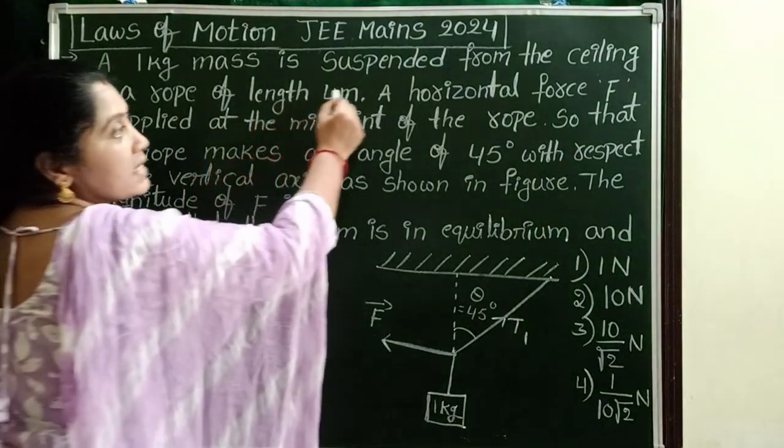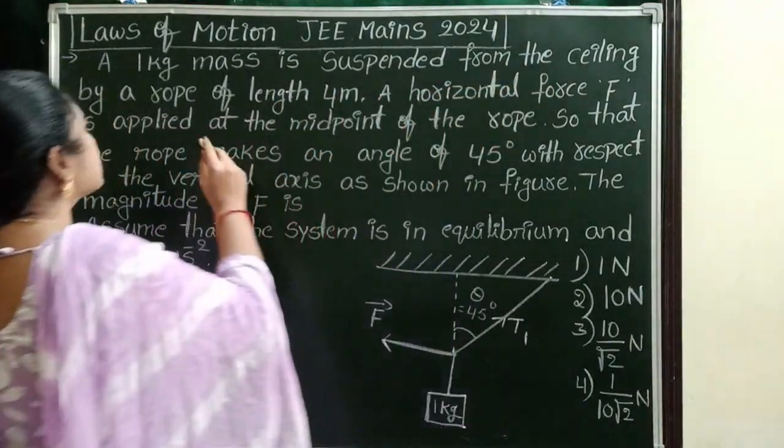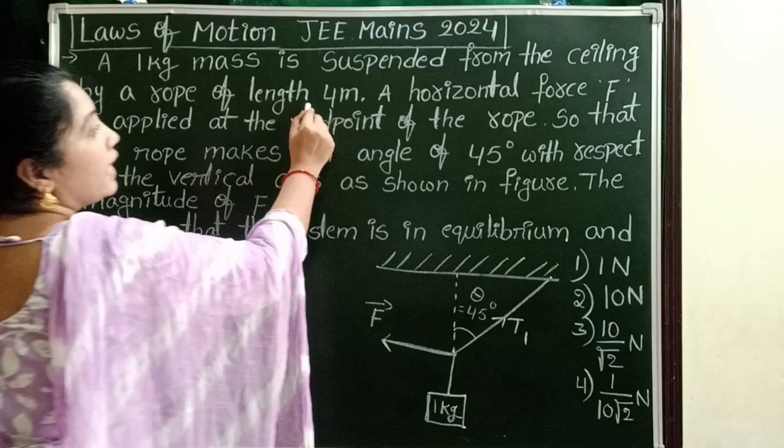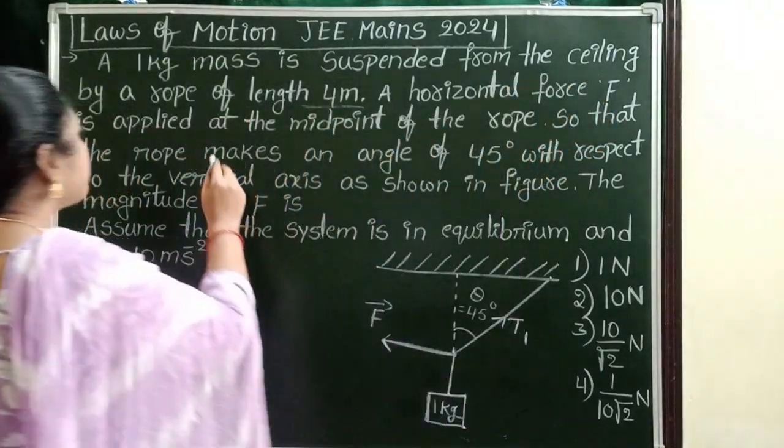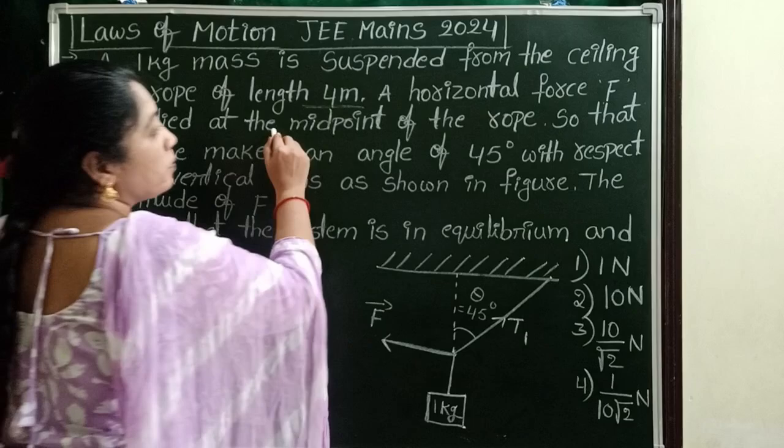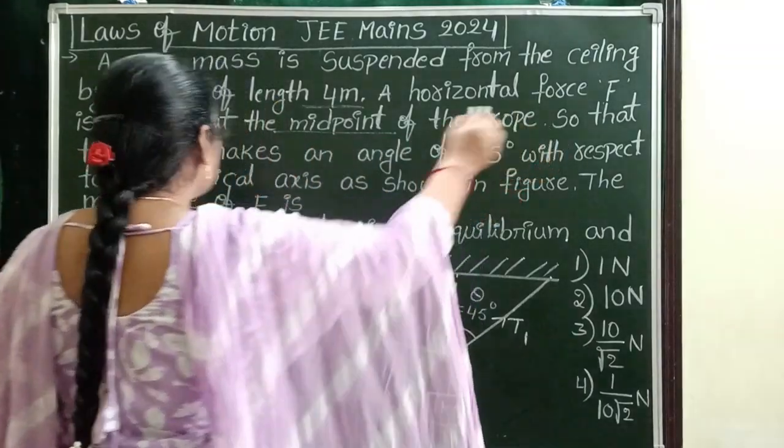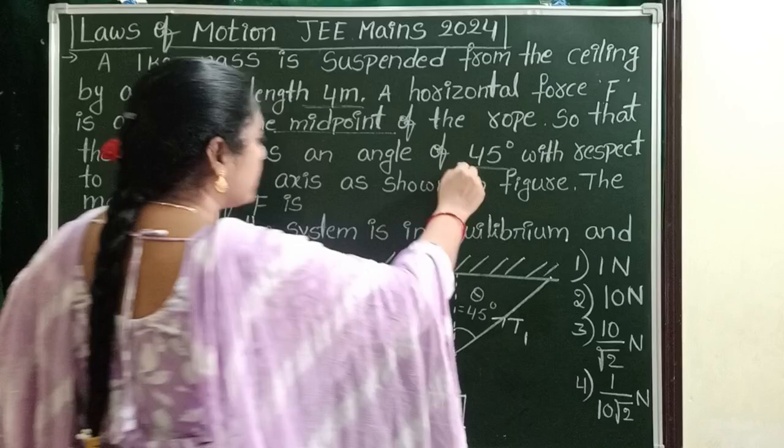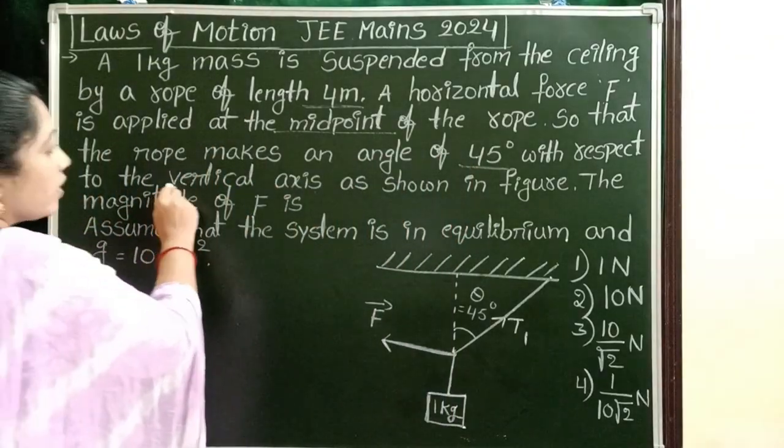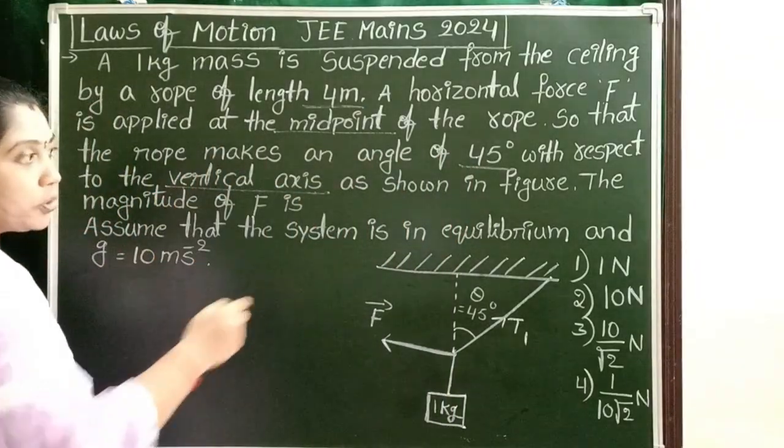A 1 kg mass is suspended from the ceiling by a rope of length 4 meters. A horizontal force F is applied at the midpoint of the rope, so that the rope makes an angle of 45 degrees with respect to the vertical axis as shown in the figure.